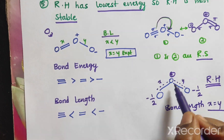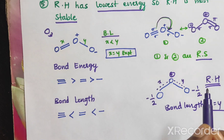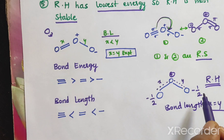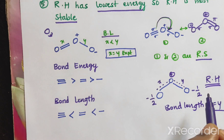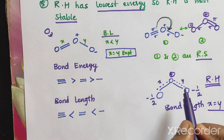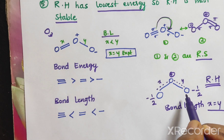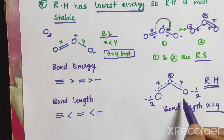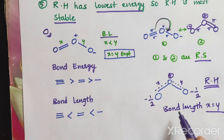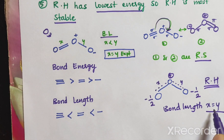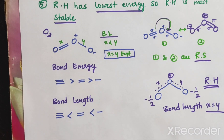Resonance hybrid is the actual structure. Hence, the bond length here is X equal to Y. Thank you for watching this video.